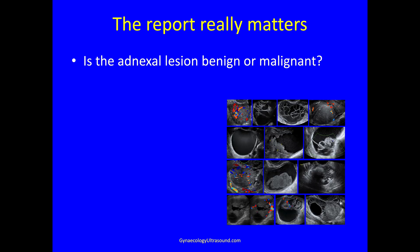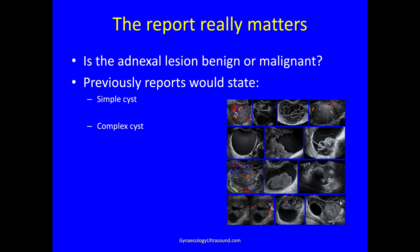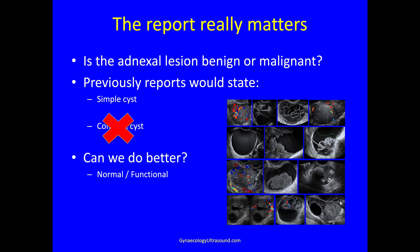Here is an example of some recent pelvic masses that I scanned. In the olden days the report would say something like a simple cyst or a complex cyst. But we don't like the word complex now because it means nothing — it's just the opposite of simple. Can we do better with the IOTA systems? Can we say whether something is normal or functional, benign, borderline, invasive, or metastatic to the ovary?